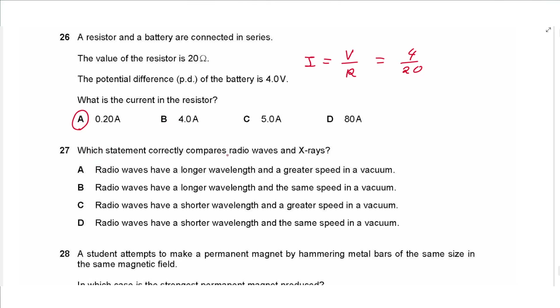Question 27: Comparing radio waves and X-rays — radio waves have a longer wavelength, which is correct, and they travel at the same speed, not a greater speed. The answer is B.